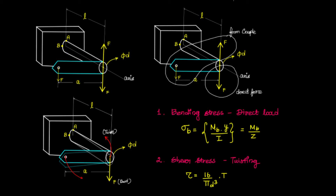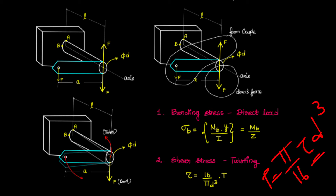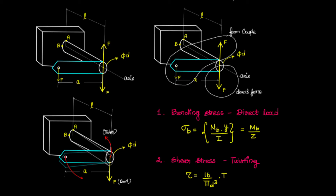The bending stress formula is: σB = MB·Y / I, where MB is the bending moment, Y is the distance from the center to the outer layer, and I is the moment of inertia. This can also be written as σB = MB / Z, where Z is the section modulus. For shear stress due to twisting, the formula is: T = (π/16)·τ·d³, so τ = 16T / (π·d³). These are the two formulas used to calculate bending stress and twisting stress.